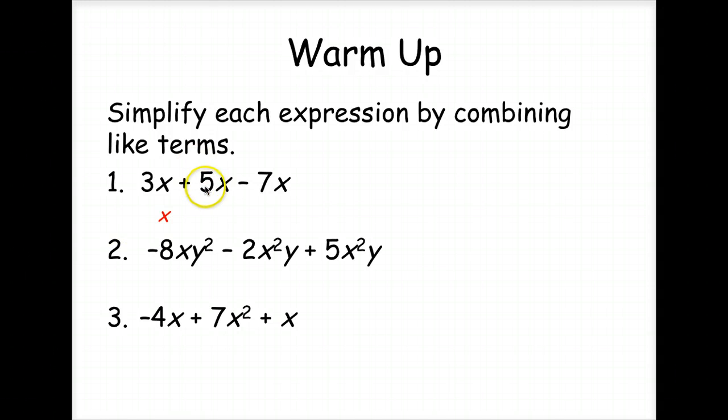So 3 plus 5 minus 7, you're going to end up with just x. 8 minus 7. There's a big difference between xy squared and x squared y. You cannot combine all three of these. Only these last two terms can you combine. So 5 minus 2 is 3. Written in descending order, we're going to move our 7x squared first, and then negative 4x plus x is negative 3x. Very good.